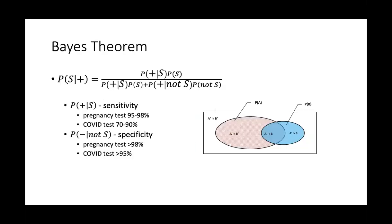So let's do Bayes' theorem. Bayes' theorem is a way to invert probability. If you look at this picture, you could think the black thing represents having a disease, while the blue things stand for getting a positive result.